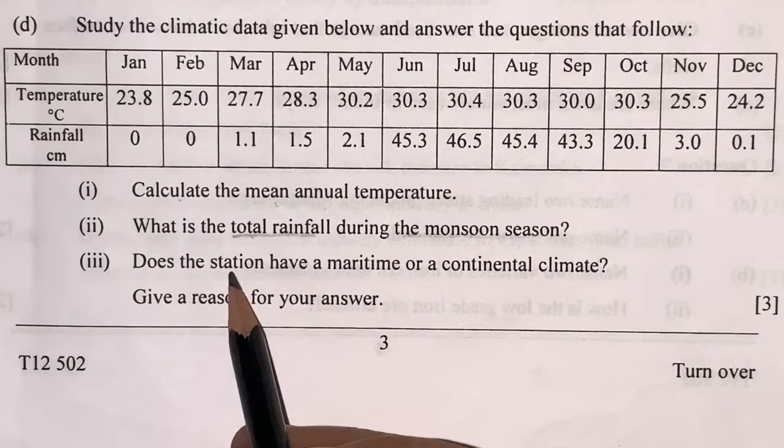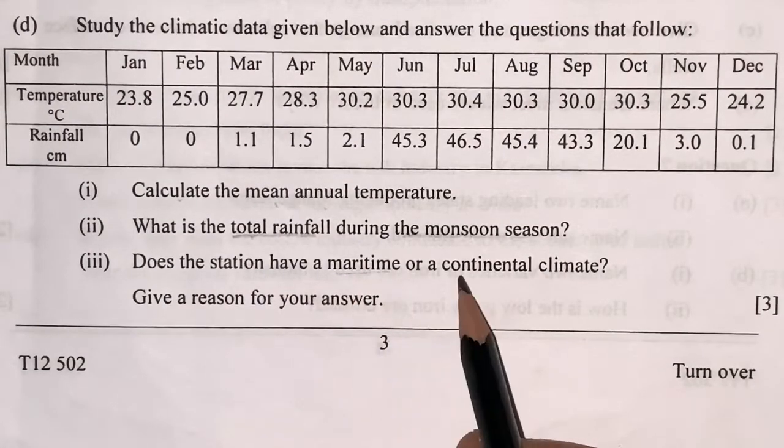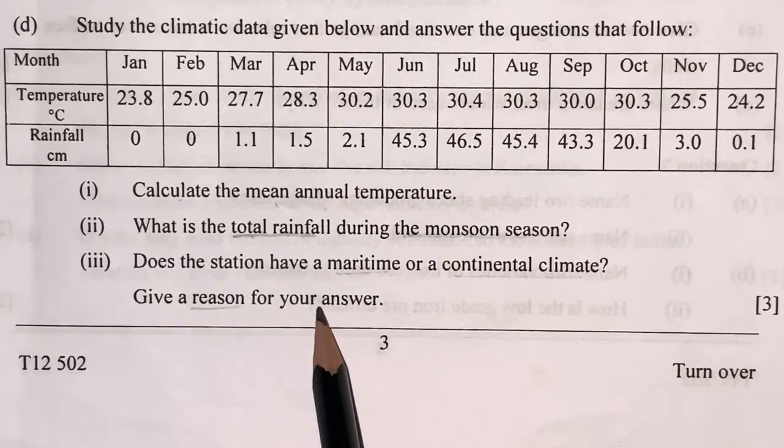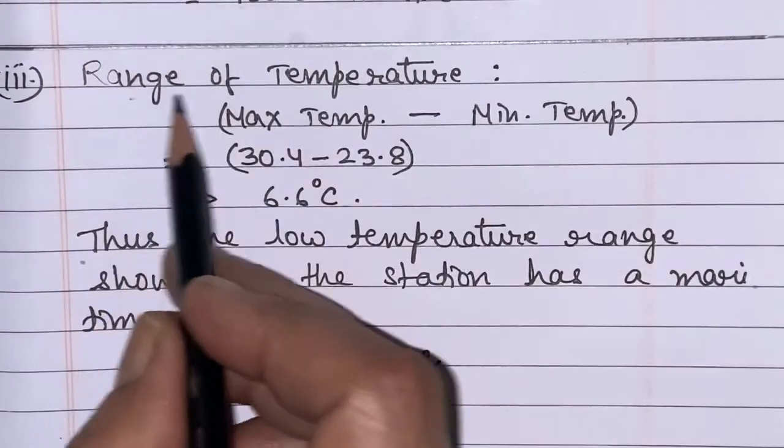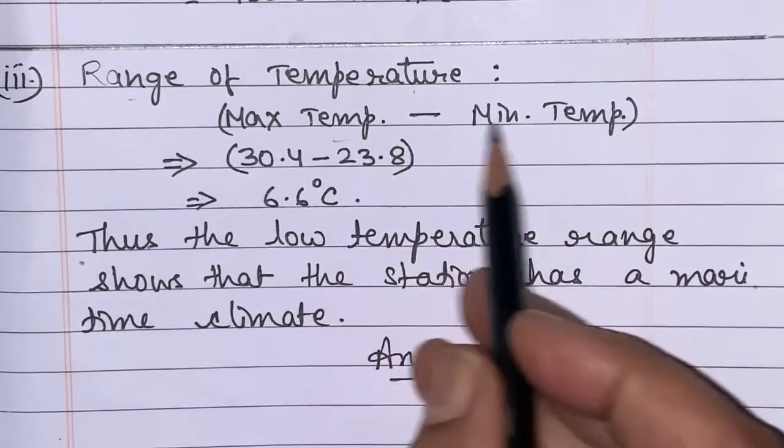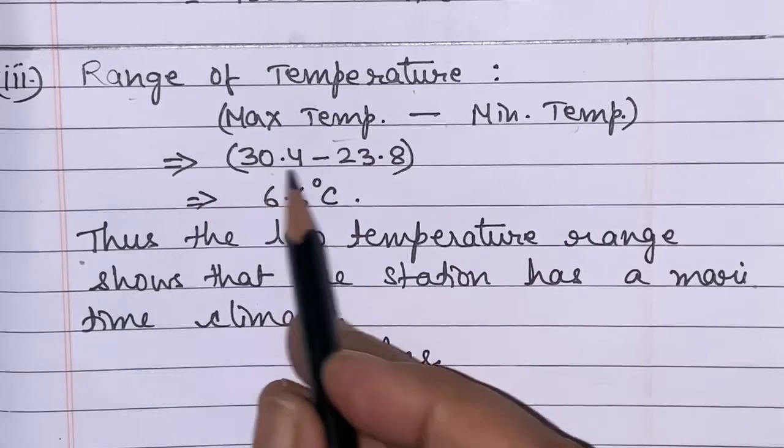The last question is: does the station have a maritime or a continental climate? Give a reason for your answer. For this we will find out the range of temperature, that is maximum temperature minus minimum temperature. I kept the values.